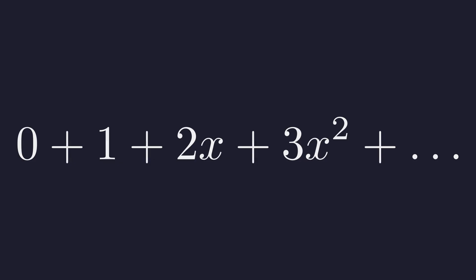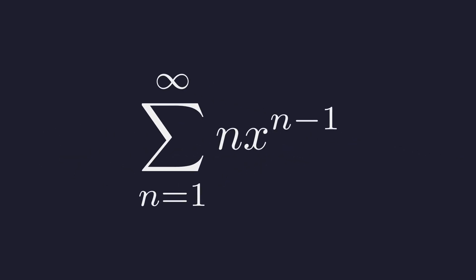Notice the pattern. The k-th term is k times x to the power of k minus 1. This gives us the sum of n times x to the power of n minus 1. Crucially, because the first term was 0, the sum now starts from n equals 1.